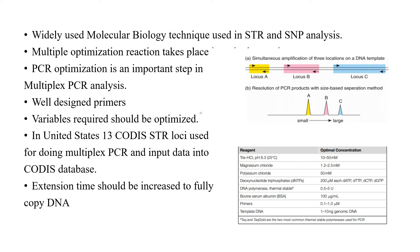The primers must possess similar annealing temperature to ensure specific priming. In the United States, 13 CODIS loci are used for doing multiplex PCR simultaneously. In multiplex PCR, the extension time should be increased to fully copy all the target DNA.